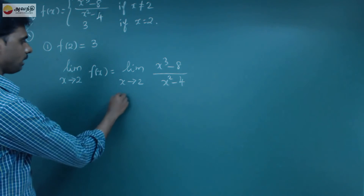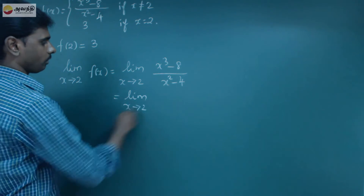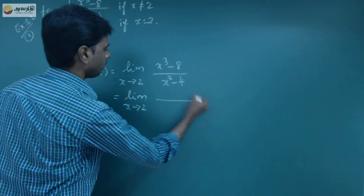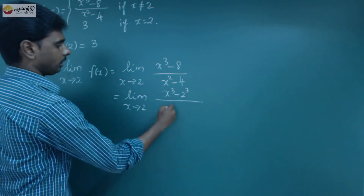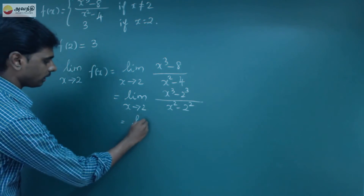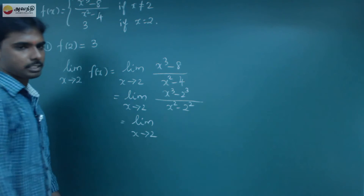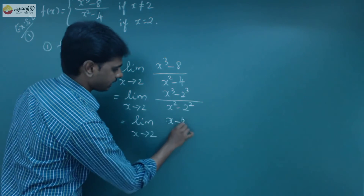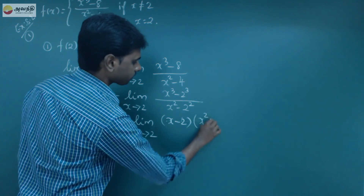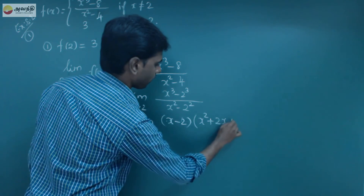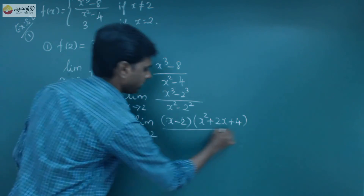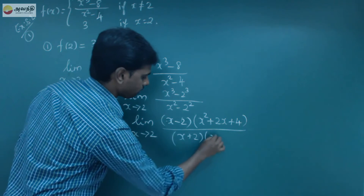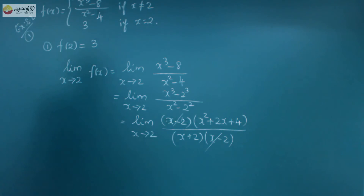Now we will substitute the limit. Limit as x tends to 2 — if we substitute 2, the denominator value is 0. So we factor: the numerator x³-8 is x³-2³, and denominator x²-4 is x²-2². Using the identity a³-b³ = (a-b)(a²+2ab+b²), the numerator becomes (x-2)(x²+2x+4). Using a²-b² = (a+b)(a-b), the denominator becomes (x+2)(x-2). We cancel (x-2).